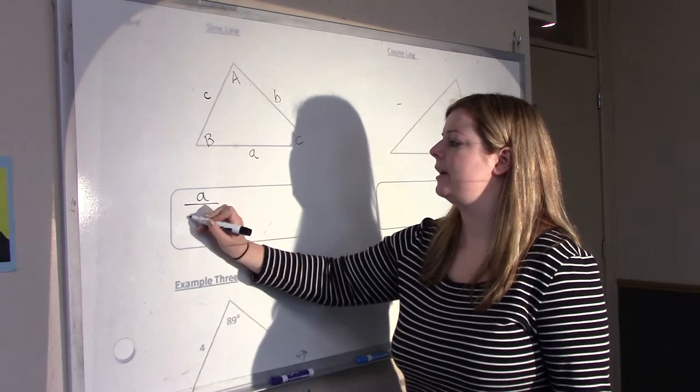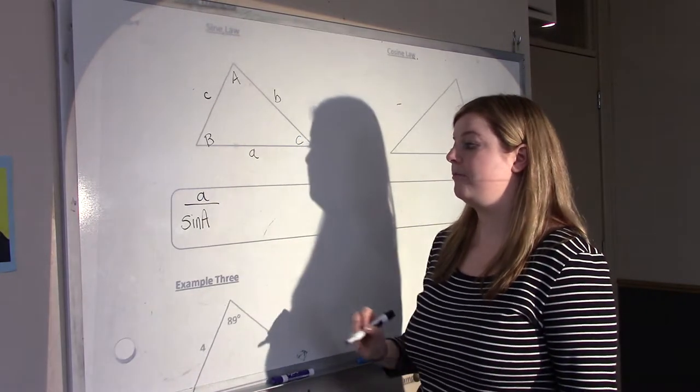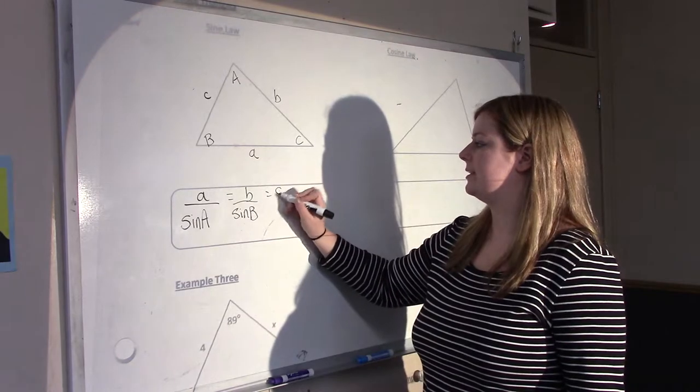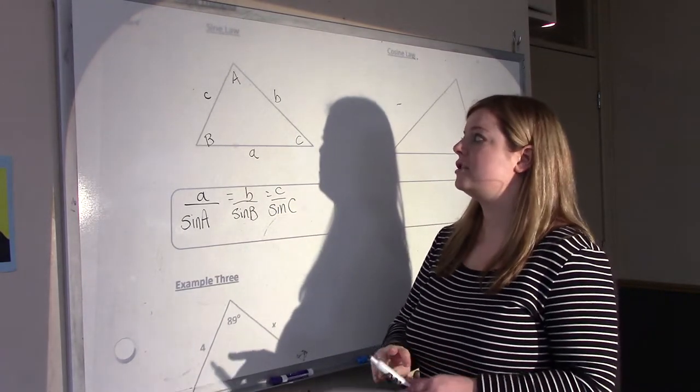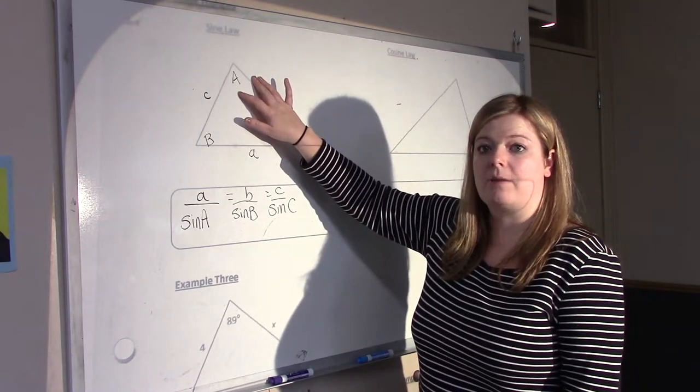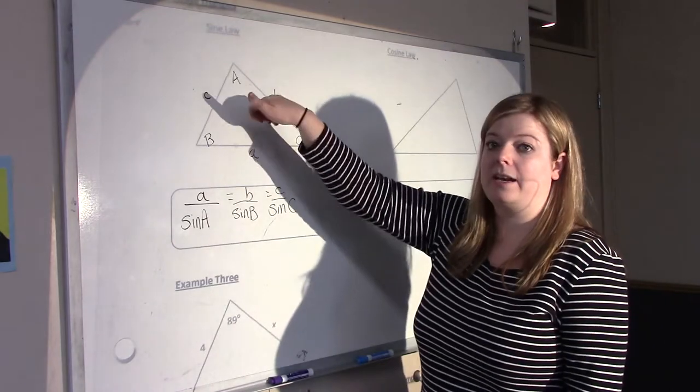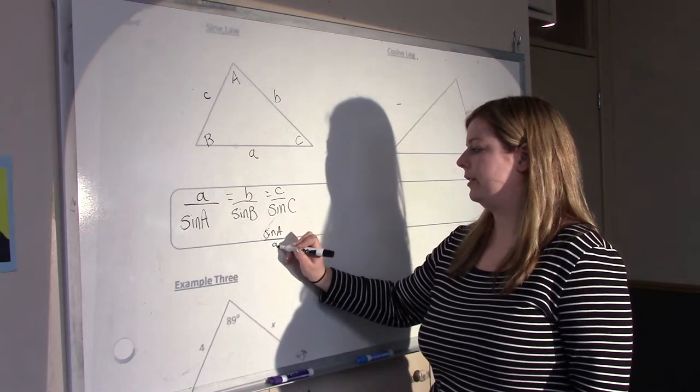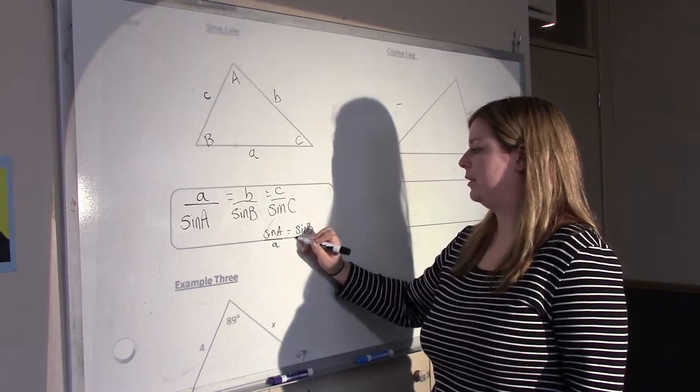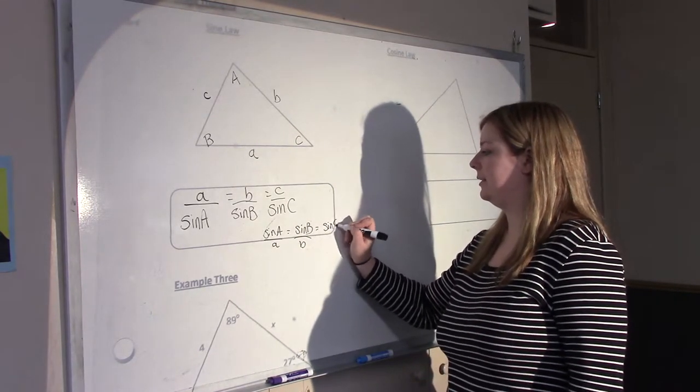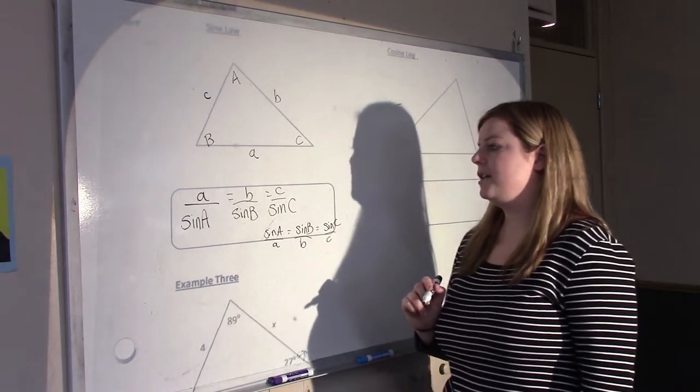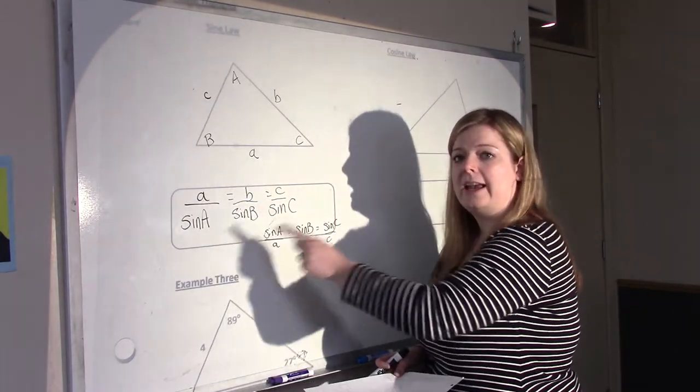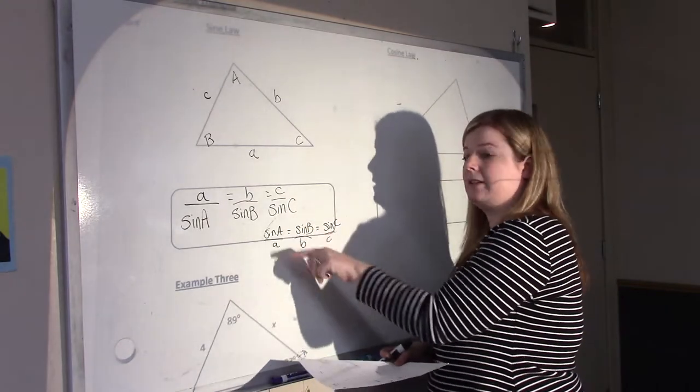The sine law says that side length A over sine of big A, angle A, is equal to B over sine B, which is equal to C over sine C. So the ratio of a side length to the sine of its opposite angle, those ratios are the same anywhere on the triangle. Now you can also turn this around. You can have sine A over little A equals sine B over little B equals sine C over little C. That works too. You just would choose the one depending on what the unknown is. If the unknown is the side length, choose this version. If the unknown is the angle, choose this version.